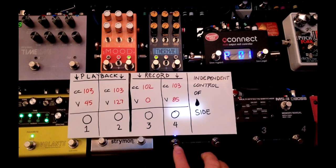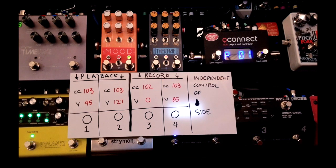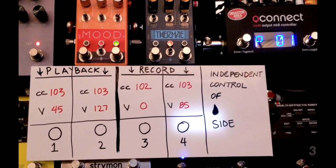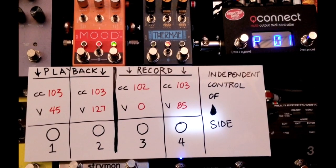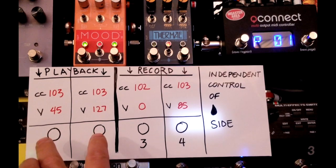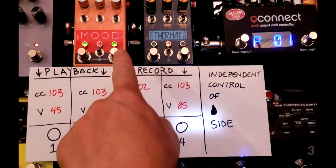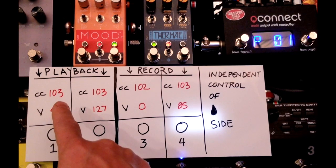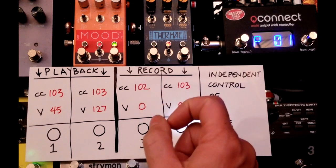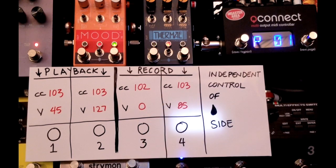So if you want this kind of action — I'm pressing number one here, then number two, just going back and forth between one and two — if you want playback but have independent control of the wet side, these are the values you want to go for. They're not always the same; these are both 103, but then to get the behavior on the record side, I had to use a 102. So you have to get a little bit creative sometimes.